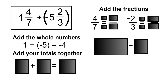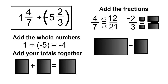Now we add the fractions. Remember, when adding the fractions, we need a common denominator, which will be 21. So 7 times 3 is 21, and 4 times 3 is going to be 12. 3 times 7 is going to be 21, so multiply the numerator by 7 — negative 2 times 7 is negative 14.